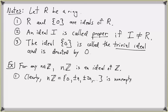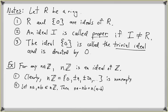Now let's show that nℤ is closed under subtraction. If we take two elements na and nb of nℤ, where a and b are integers, then na − nb = n(a − b). Since a and b are both integers, a − b is an integer, and therefore this is an element of nℤ.